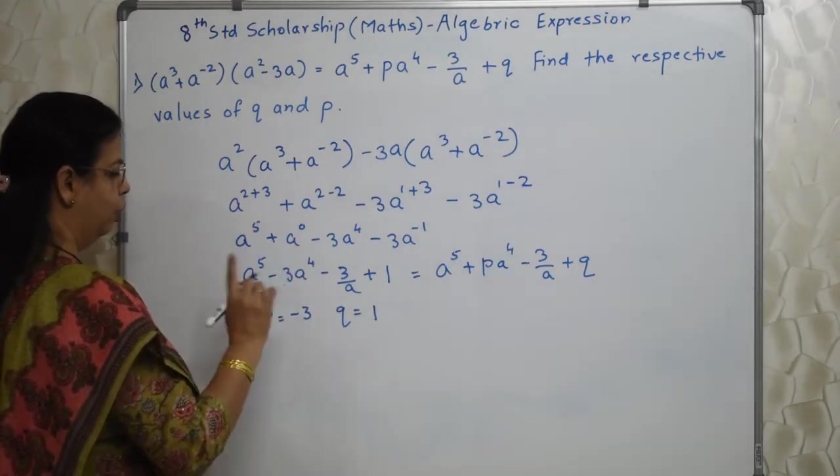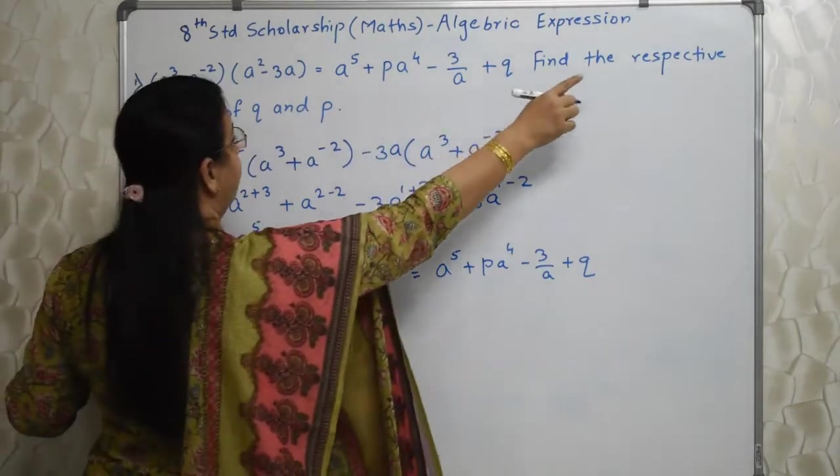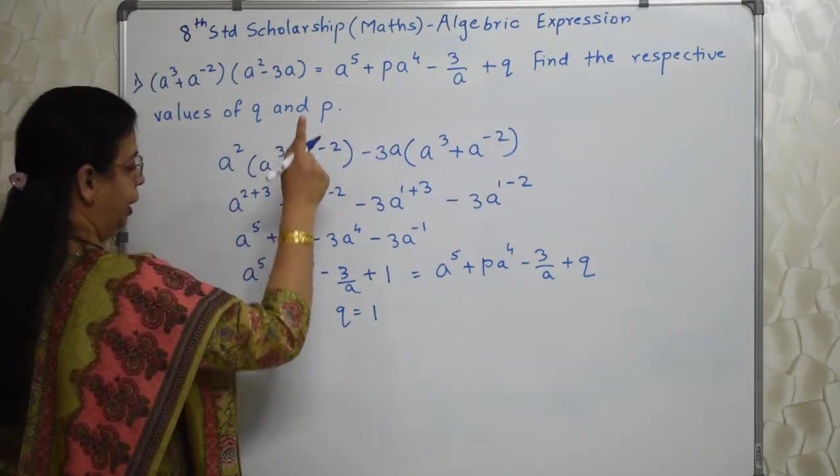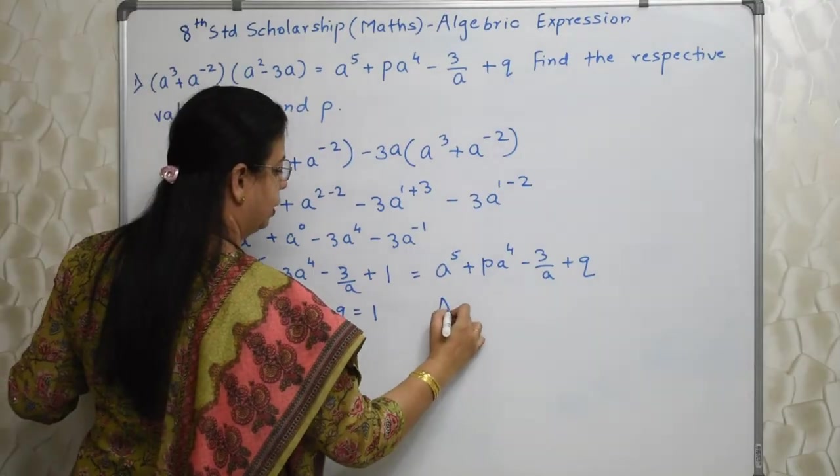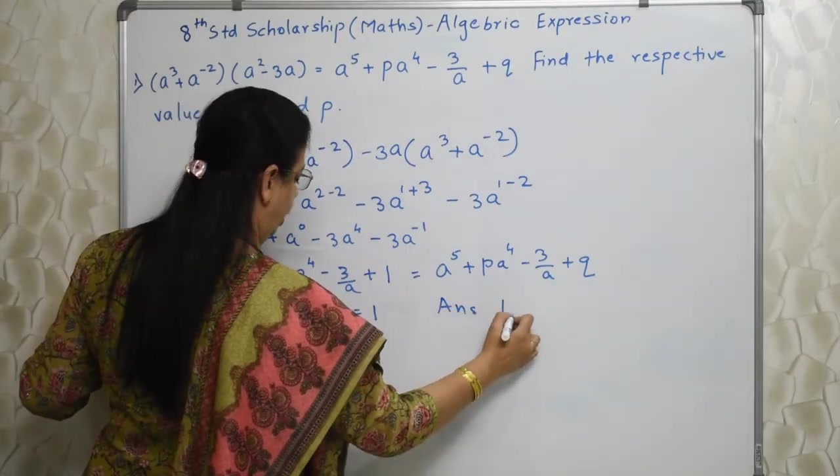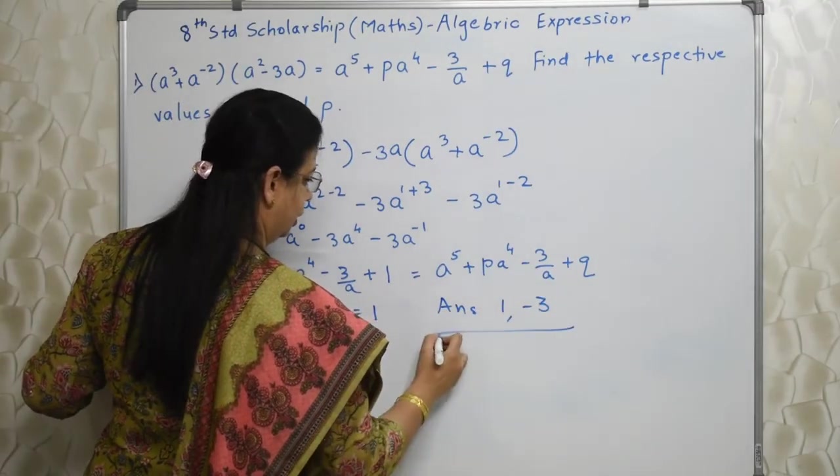Two marks gone. Why? Because respectively, Q and P. Q should be written first. So answer is 1 and then minus 3. This is correct answer. Please be careful, children.